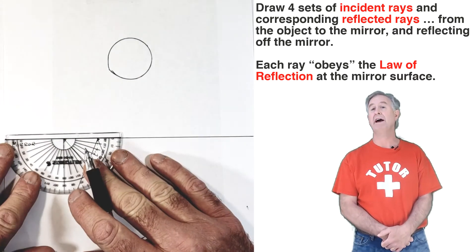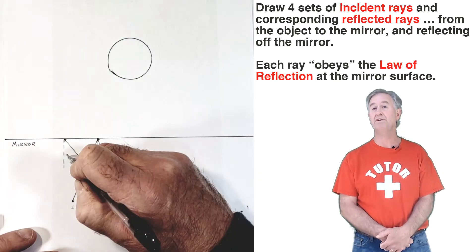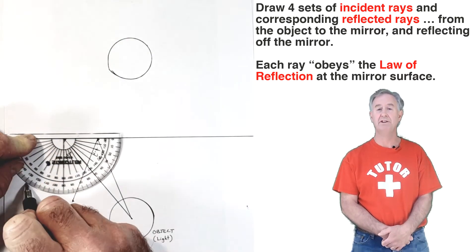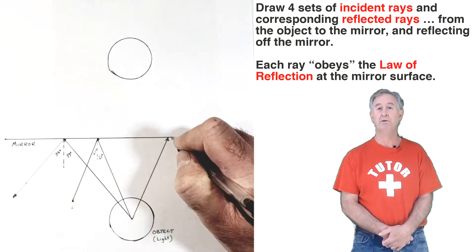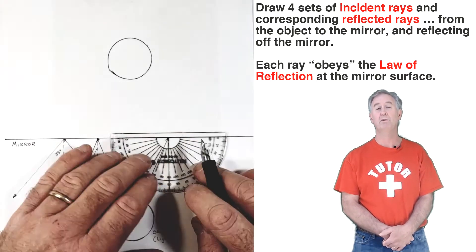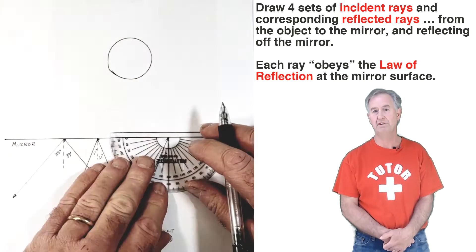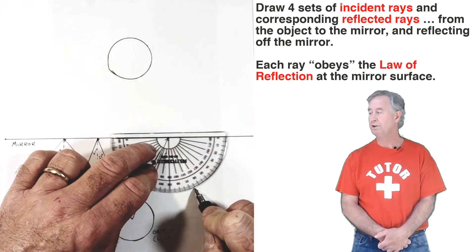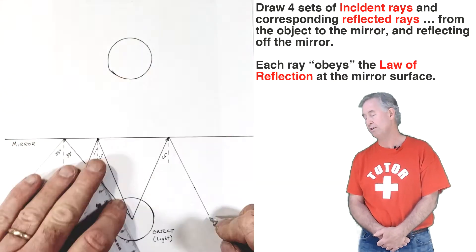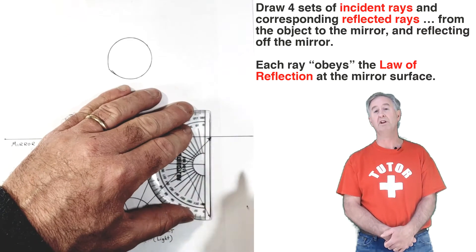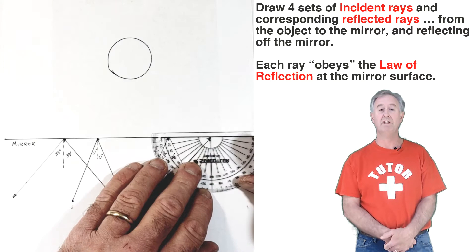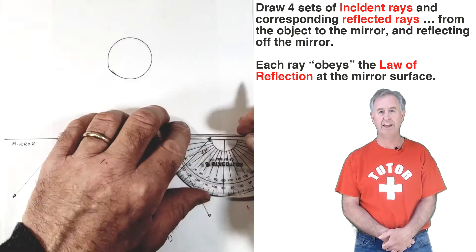I'm going to do that for four different sets of incident and reflected rays. And when done, we're going to ask: what do these reflected rays have to do with the location of the image behind that mirror?